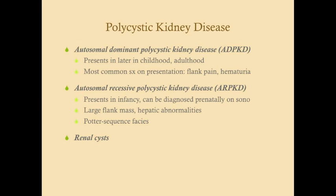Autosomal dominant polycystic kidney disease presents later in childhood or in adulthood, so it is often called adult onset polycystic kidney disease. You can remember this as AD for adult. But this can present in kids too, so really autosomal dominant presents more in non-infants, whereas autosomal recessive presents in little tiny babies.